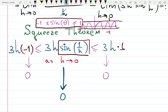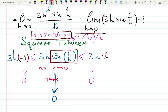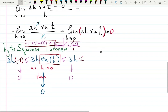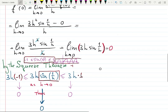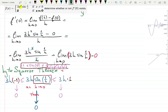So the middle expression 3h·sin(1/h) has a finite limit of zero by the Squeeze Theorem. Since this limit exists and is finite, the derivative at zero exists. The answer is yes — f′(0) exists.